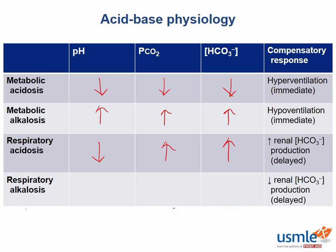Moving on, in respiratory alkalosis, the pH will be increased. What will this do to the bicarb? First, we have to understand that the pCO2 will be decreased, because excess amounts of CO2 would have to be blown off in order to cause an alkalosis. Therefore, the kidneys would respond by decreasing bicarb production, so bicarb concentration will also be decreased. Can you think of a commonly tested medication toxicity that might predispose someone to respiratory alkalosis? Correct — salicylate overdose.